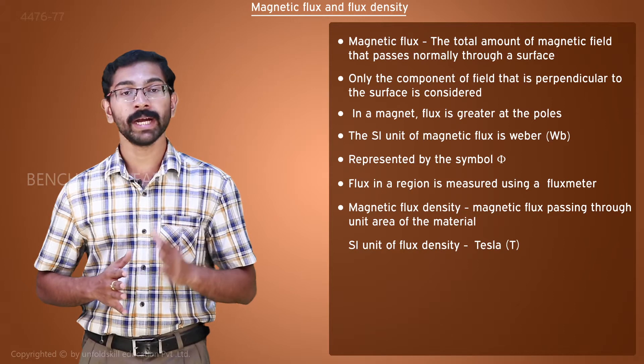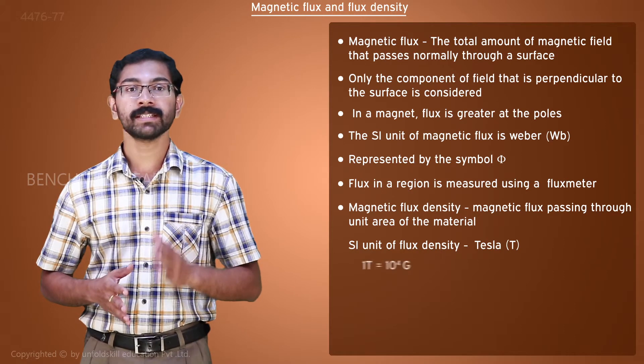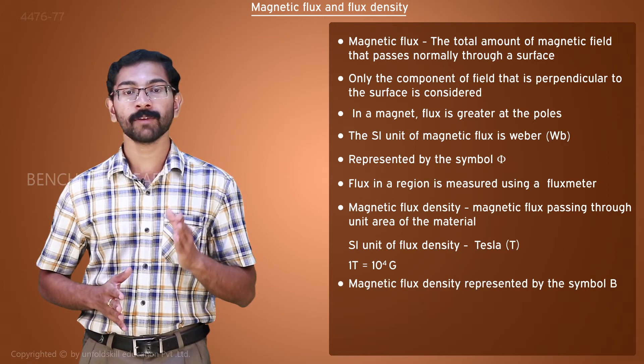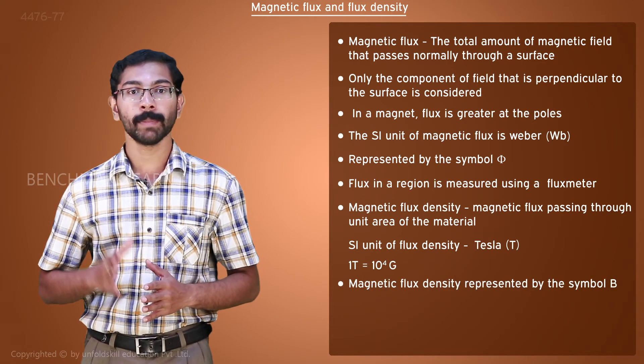One tesla is equal to 10 raised to 4 gauss. We represent the magnetic flux density using the symbol B.